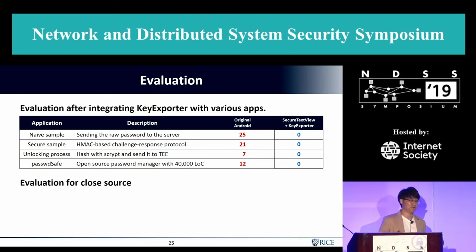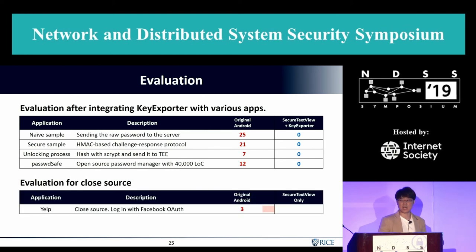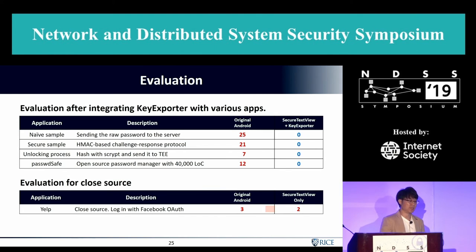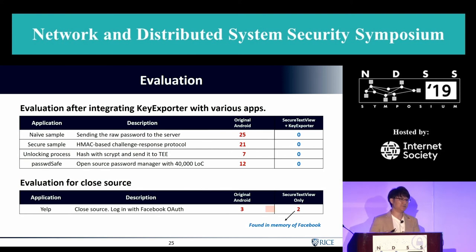We also tested with closed-source applications — without the key exporter and without modifying the application itself, just running on the modified Android framework. We tested Yelp login via the Facebook API, which normally has three passwords after login. Applying only the modified framework, we removed one password, but two remained. We found those two passwords are not from Yelp but from the Facebook API itself, so the Facebook implementation would need to be fixed using the key exporter approach.